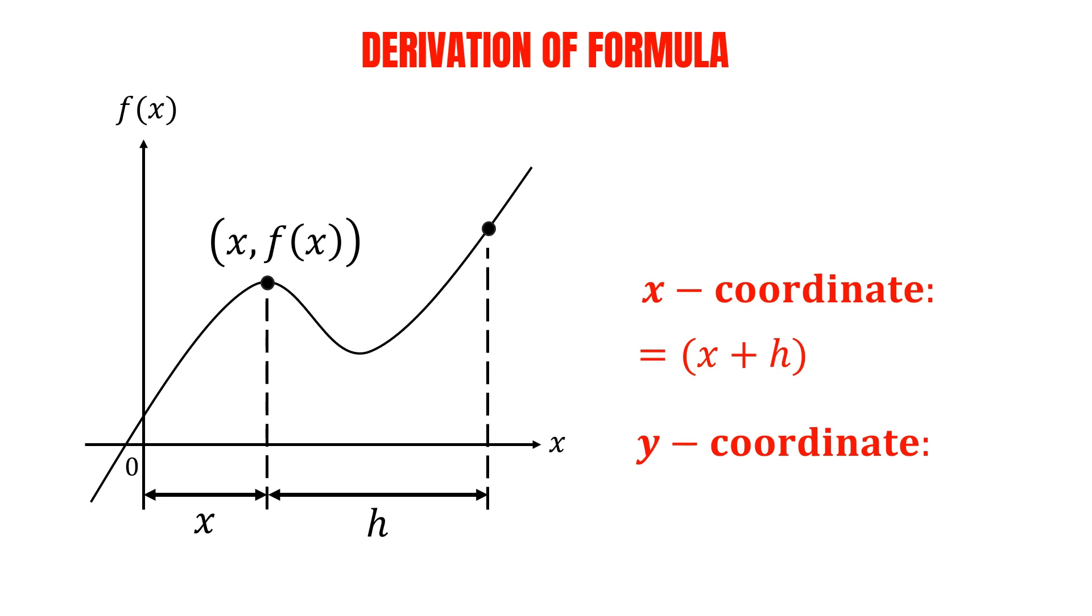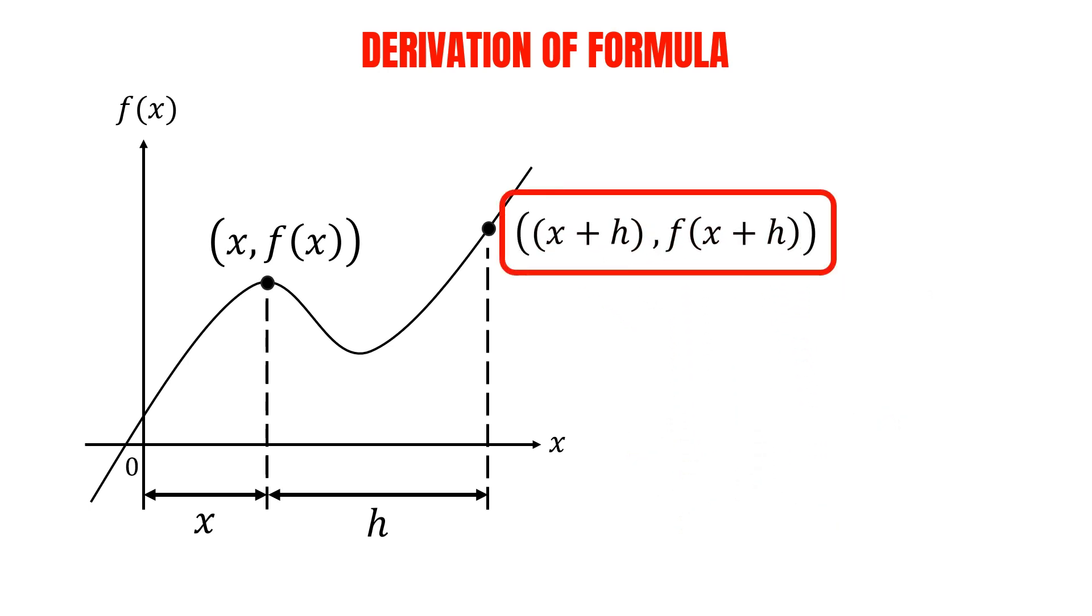For the y-coordinate, just like what we did earlier, we substitute the x-coordinate into the function, f of x. In this case, we get f of x plus h as the y-coordinate. And now we've got the coordinate for the second point as well.